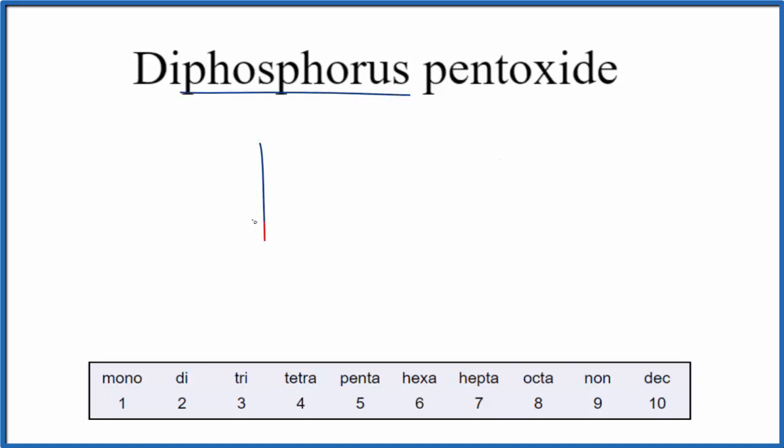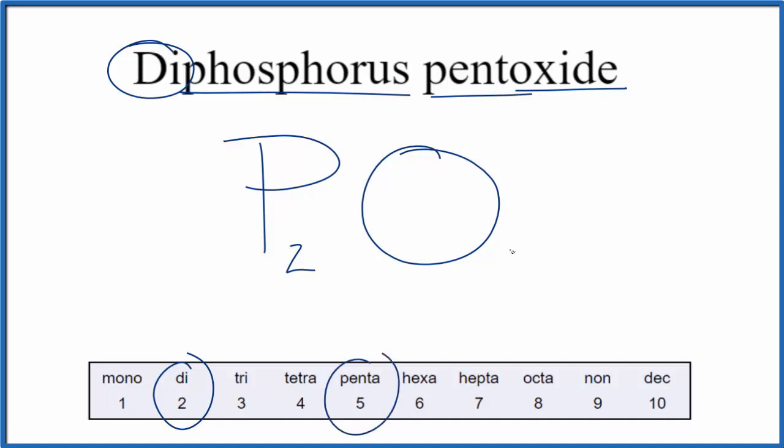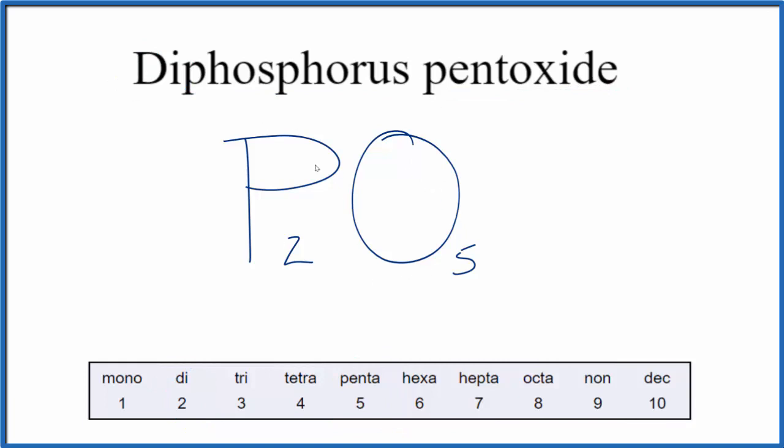You'd say I've got phosphorus so that's P, and di, that's the prefix 2, P2. And then oxide, that's from oxygen, and pent means 5, P2O5. And that would make sense, that follows the rules for naming these molecular compounds. You know it's molecular because we have the prefixes in the name.